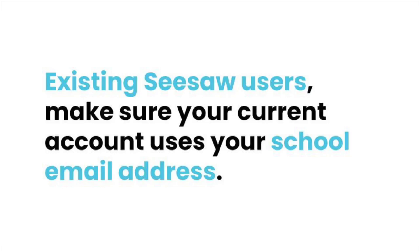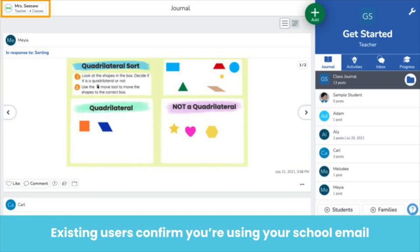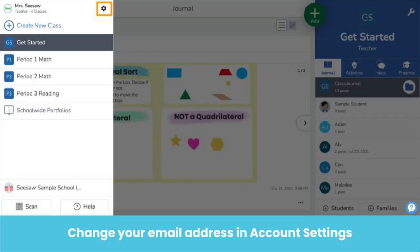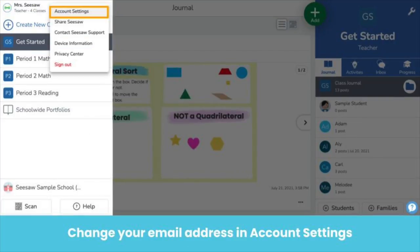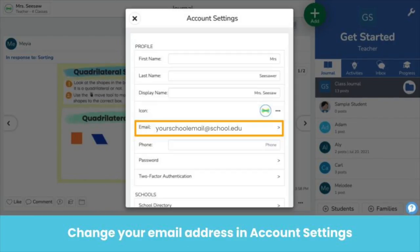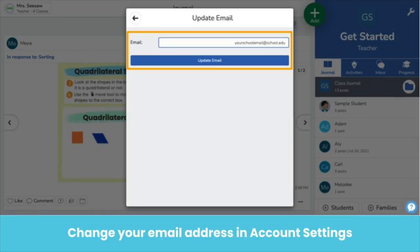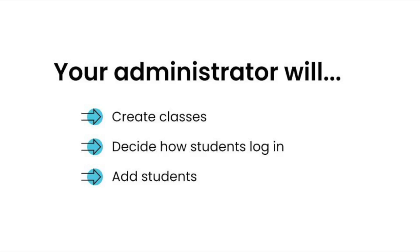If you already use Free or Seesaw Plus, make sure the email on your current account is your school email address. This allows your administrator to merge your current account with your new Seesaw for Schools account without losing any of your data. To check the email on your current account, click your profile icon on the top left, click the gear icon, then account settings. Here's your account email address. If it's not your school email, click to change it, type your school email, then click Update Email. You're all set. Your administrator handles the rest of the setup for you.